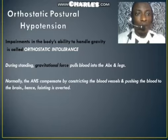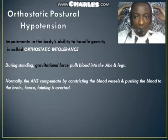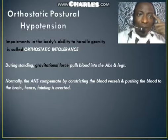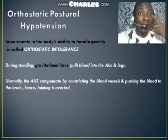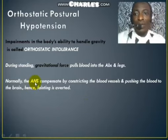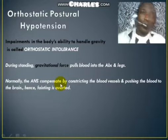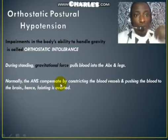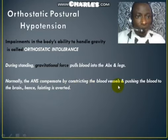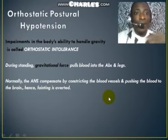Normally, the autonomic nervous system tries to inhibit this downward pull of blood by constricting the blood vessels and pushing blood back to the brain. If the brain lacks blood, it will lack oxygen and nutrients, and fainting can occur. Without this ANS compensation, whenever we stand we would faint, because the whole blood is pulled from the upper to the lower part of the body, causing the brain to lack blood.